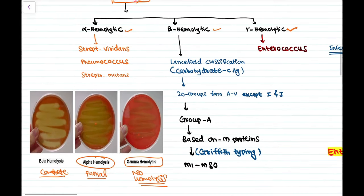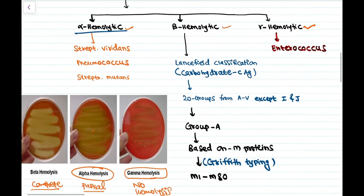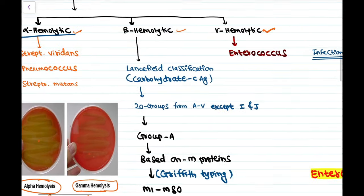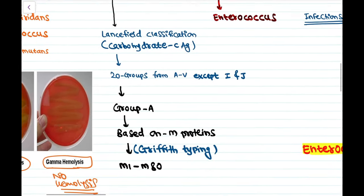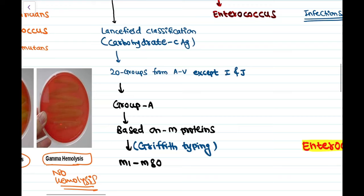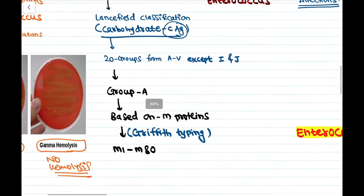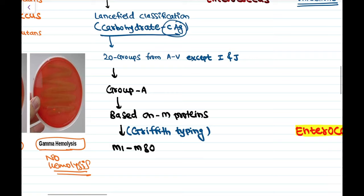The alpha hemolytic group contains Streptococcus viridans, Pneumococcus, and Streptococcus mutans. The beta hemolytic group is divided based on the carbohydrate C antigen (also called polysaccharide C antigen) into 20 groups from A to V, except I and J. This is called Lancefield classification.